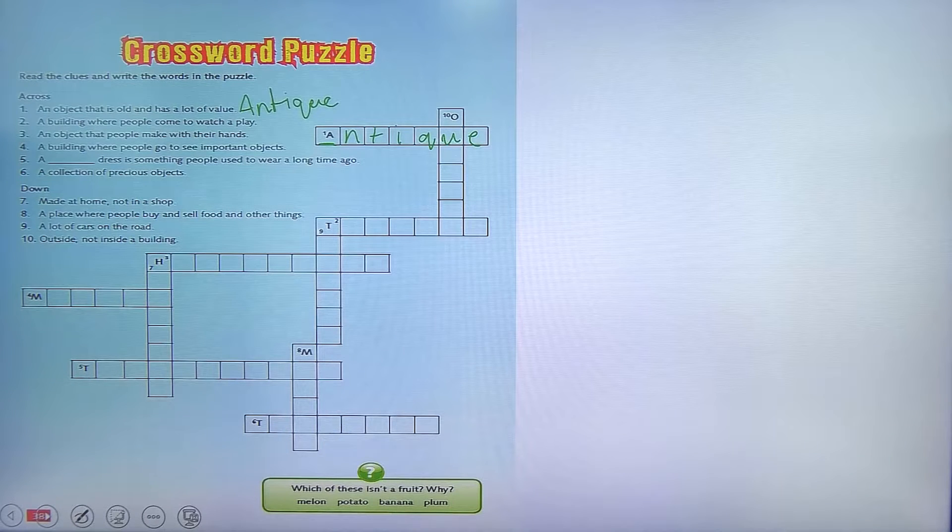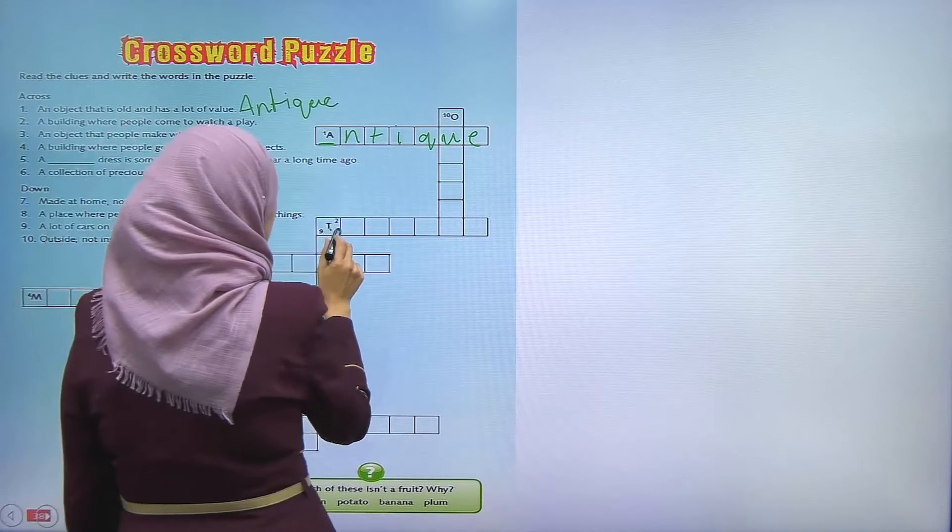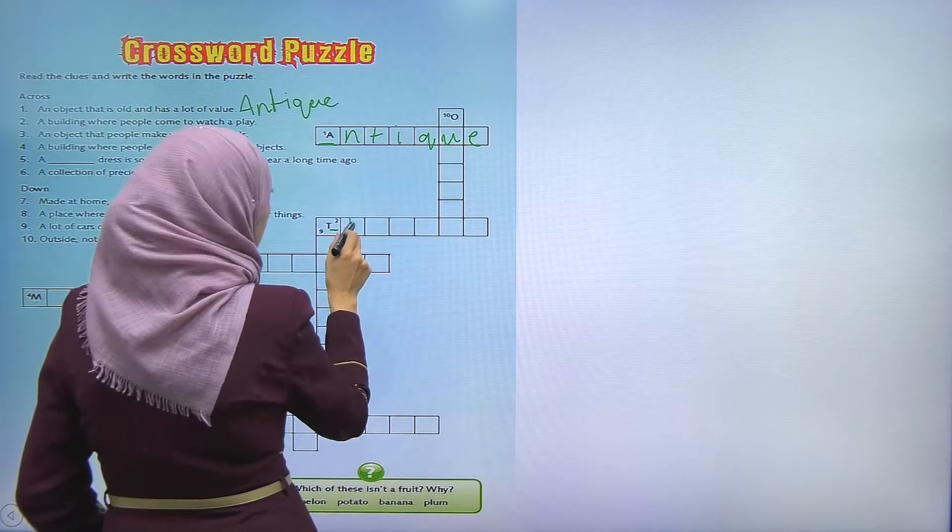Okay, and take the second one. A building where people come to watch a play, so what do you think it is? Here is number two, so it's a theater.